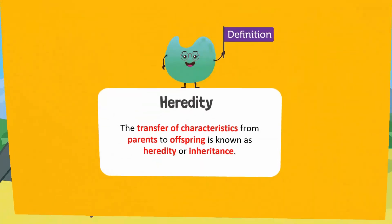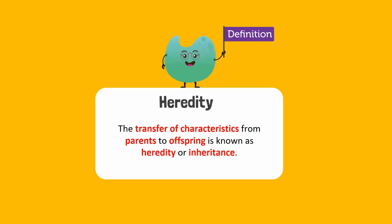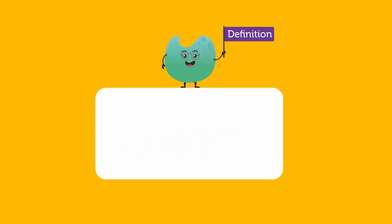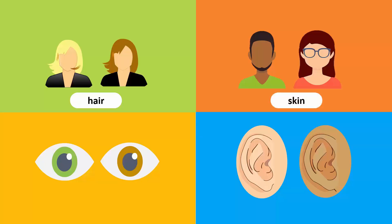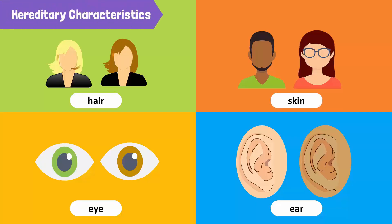The transfer of characteristics from parents to offspring is known as heredity or inheritance. Traits like eye color and height are transferred from parent to child. These are called hereditary characteristics. Hair, skin color, eye color, and free or attached earlobes are a few examples of hereditary characteristics that are transferred from parents to offspring.